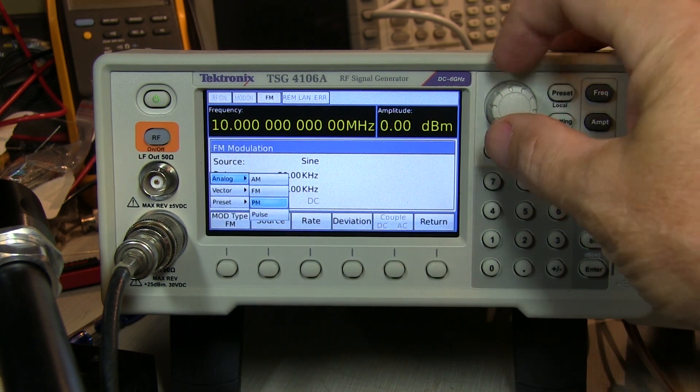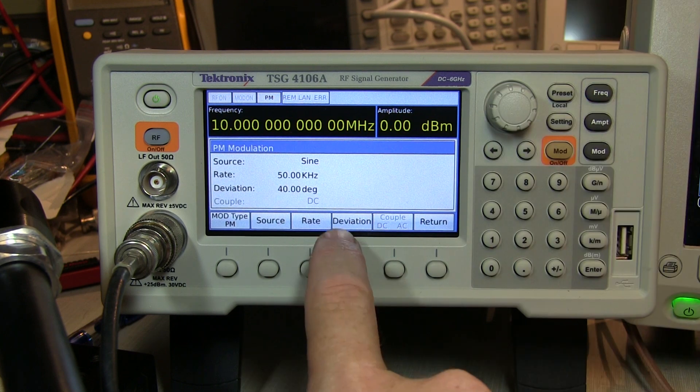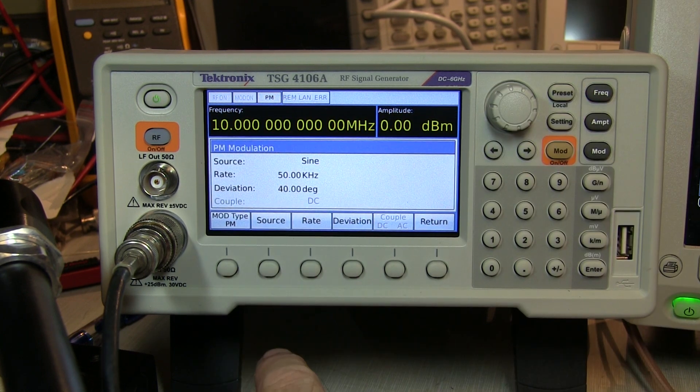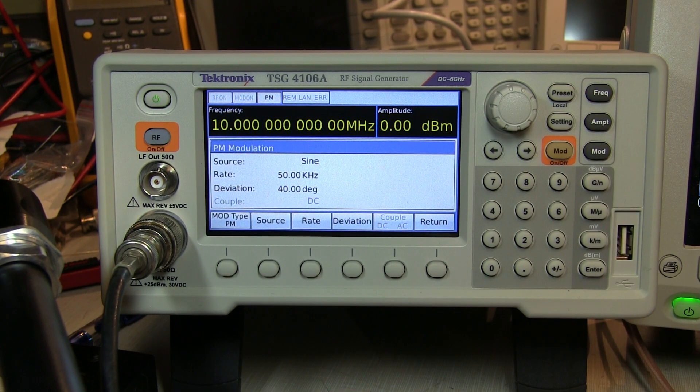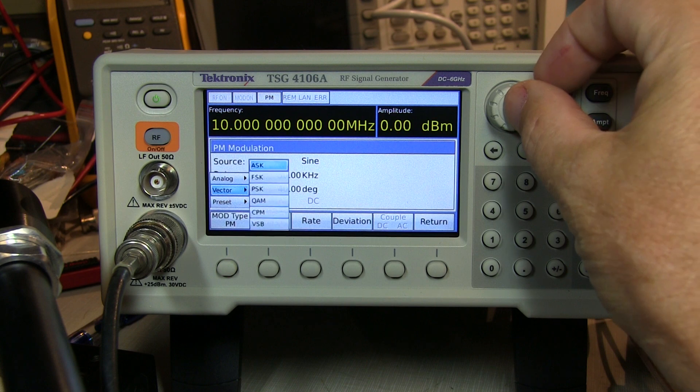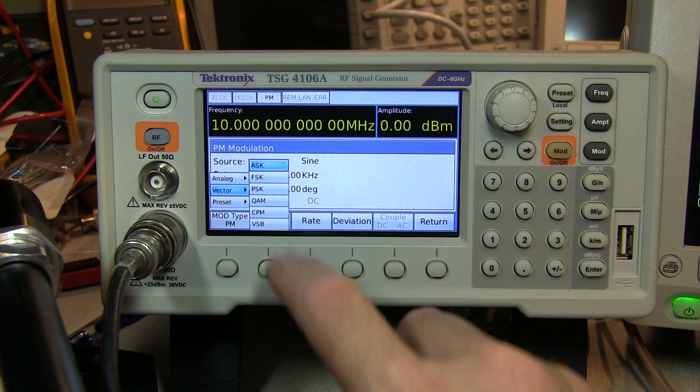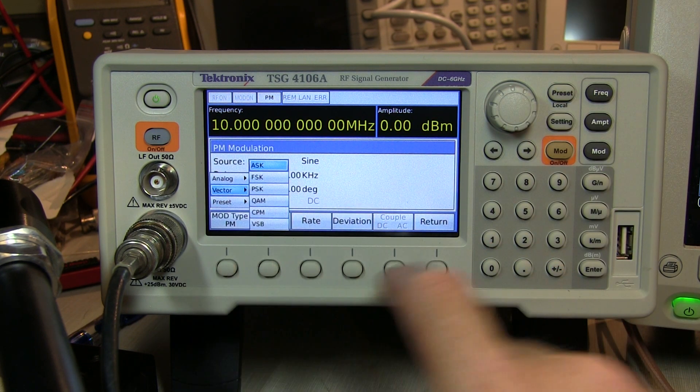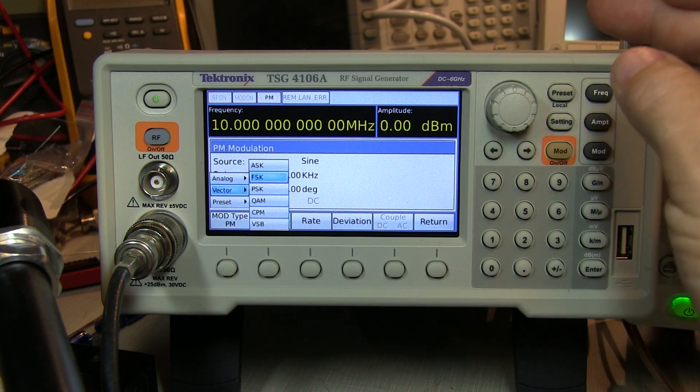We go back to, we go to say PM, and select that. Then we get phase deviation instead of frequency deviation. The optional vector modulation allows you to select amplitude shift keying, frequency shift keying, and again, the menus will change depending on what you want to do.